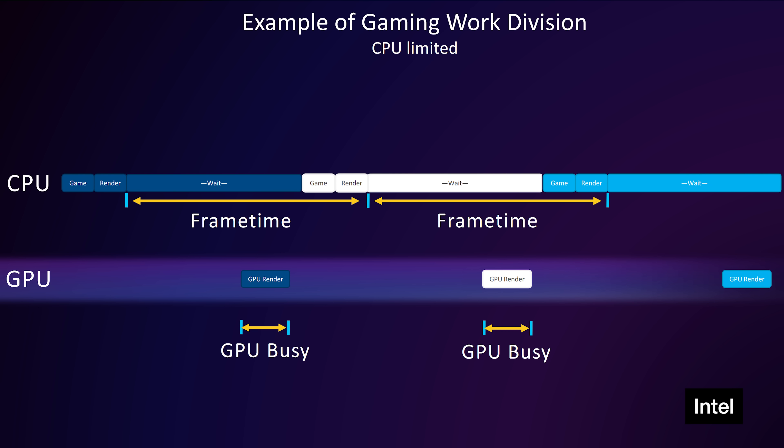We already use this tool and so do most reviewers. It's just getting updated with a new metric, and that metric has a clear potential to be as big as 1% lows, 0.1% lows, and frame time data within the review space. Frame times were the last major review revolution, so we're due.